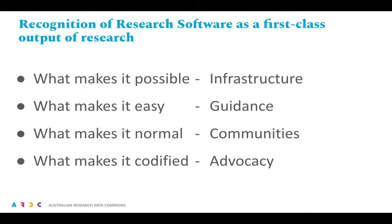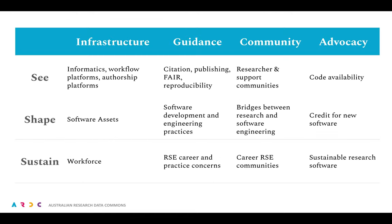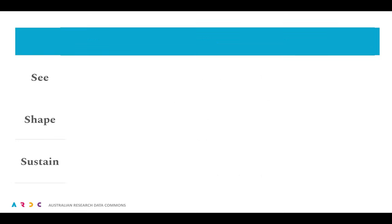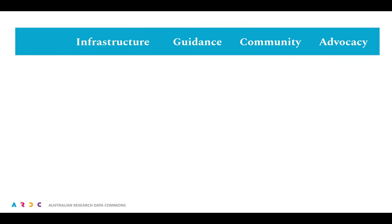Guidance here includes relevant materials and assistance. Advocacy here is shorthand for both advocacy and adoption of both policy and incentive structures. The agenda is a set of 12 actions organized in a grid of three layers and four columns, and a mapping of those 12 actions to relevant stakeholder segments across the nation, not just the ARDC.